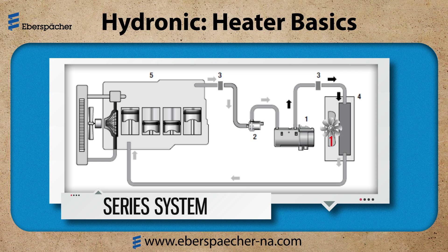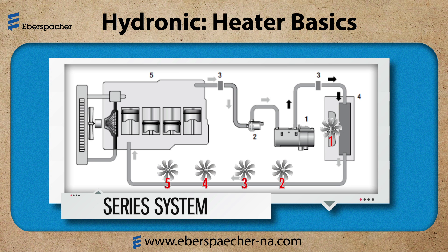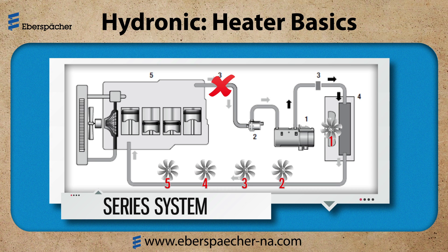To illustrate a point, let's add four more fan units to this circuit. Do you think that fan number one will blow warmer air than fan number five? The answer? Maybe a few degrees. I probably will not feel the difference, but I can measure it. This holds true if I have good coolant circulation. If I have a restriction, like a kinked hose or maybe a restricted fitting or valve, then my coolant is not circulating well and fan number five is definitely blowing colder air than fan number one.